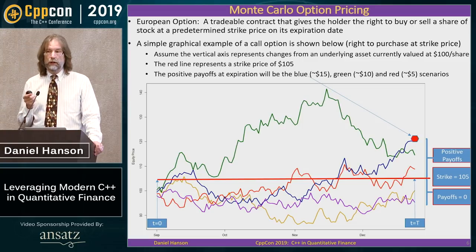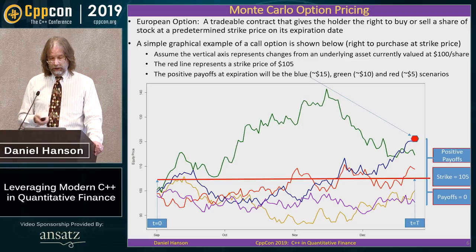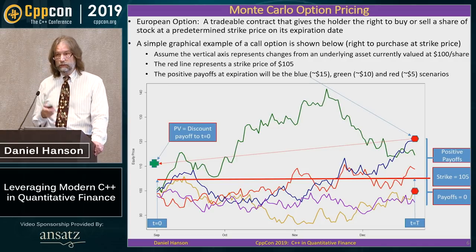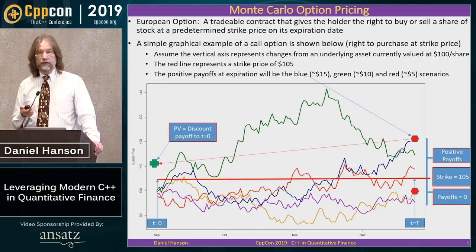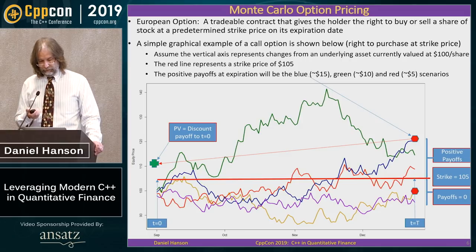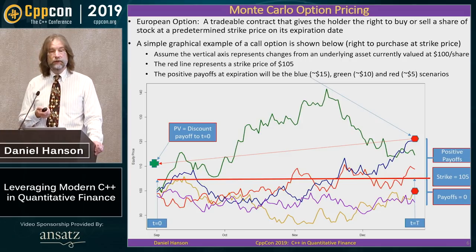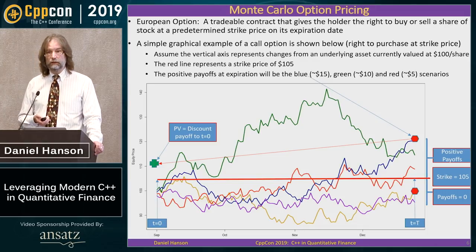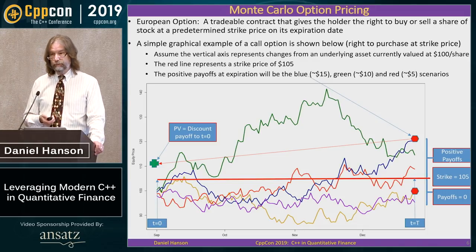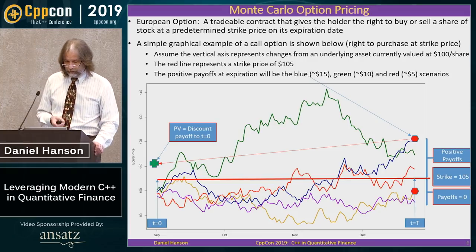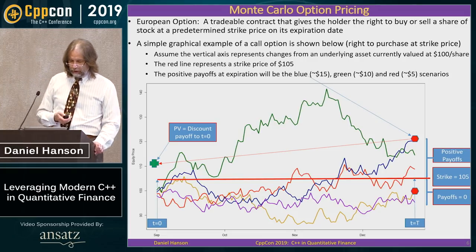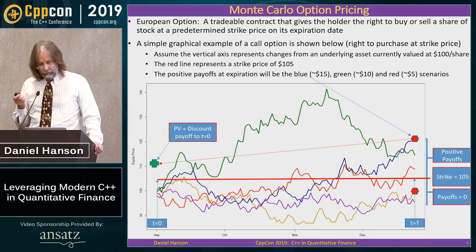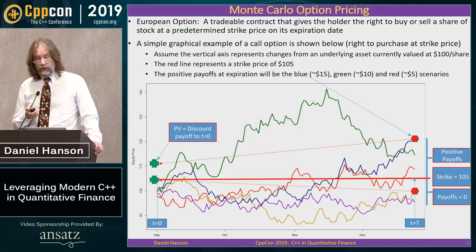That profit is in the future, but for our pricing model we have to discount it back to today using a discount factor based on the current interest rate. What happens if the terminal stock price is below the strike? In that case, the option expires worthless — it makes no sense to pay $105 to sell for less. We discount that back as well, trivially to zero.